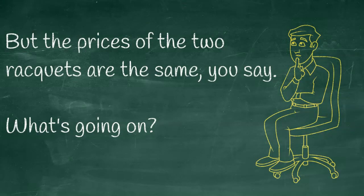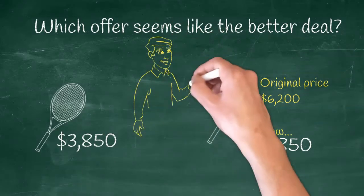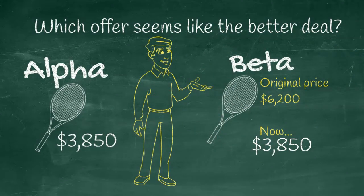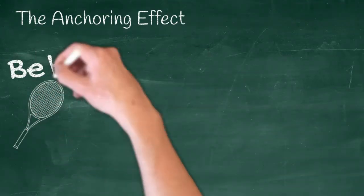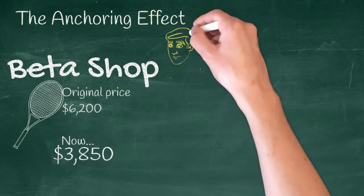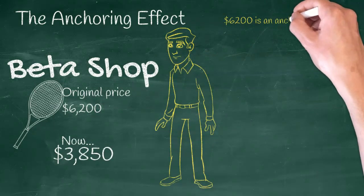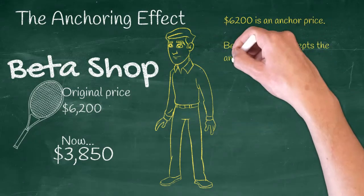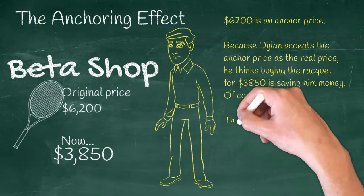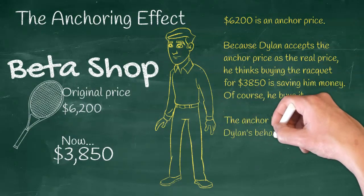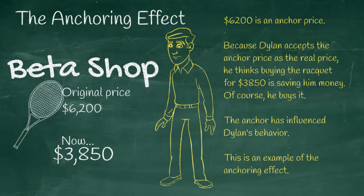Which offer seems like the better deal — Alpha or Beta? The anchoring effect. The Beta Shop has an original price which is higher, but now it's been reduced. $6,200 is the anchor price because Dylan accepts the anchor price as the real price. He thinks buying the racket for $3,850 is saving him money. Of course he buys it. The anchor has influenced Dylan's behavior. This is an example of the anchoring effect.